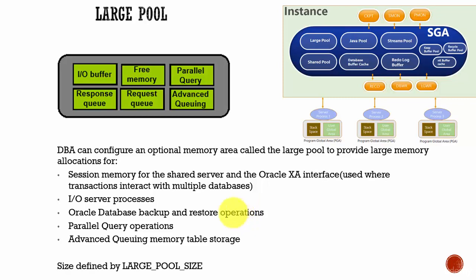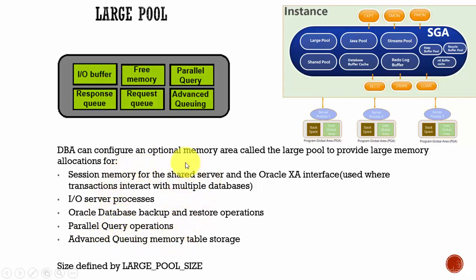Another one is your parallel query operations. And the final one is Advanced Queuing. Like this, whenever you encounter these five types of requirements, it is better to allocate large pool.